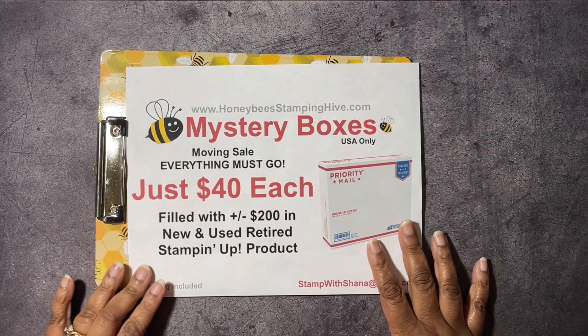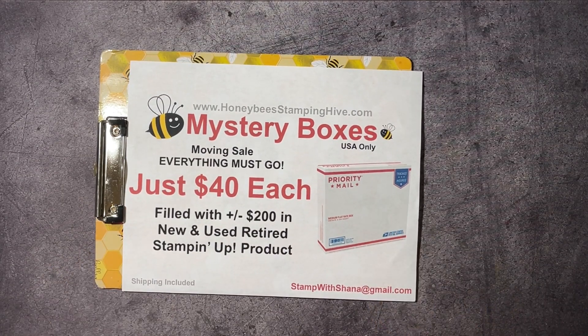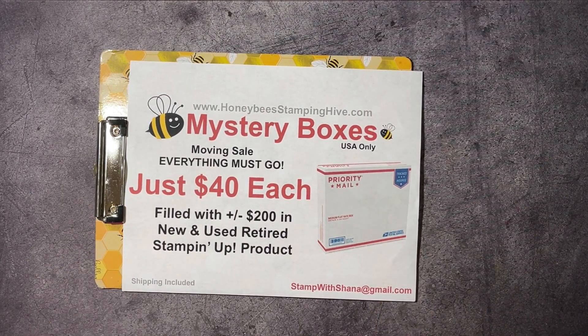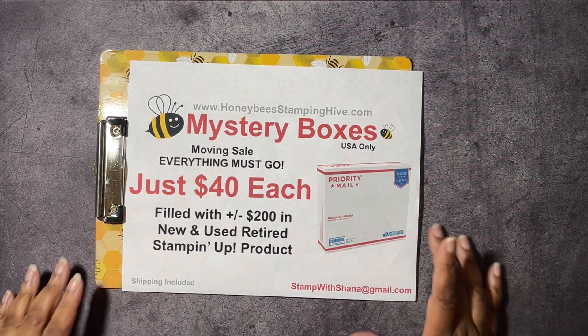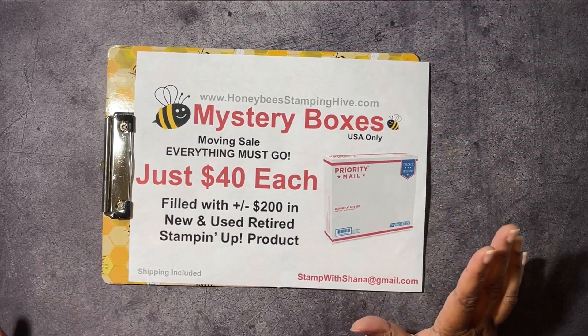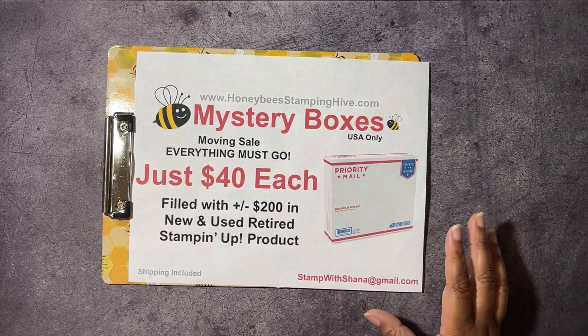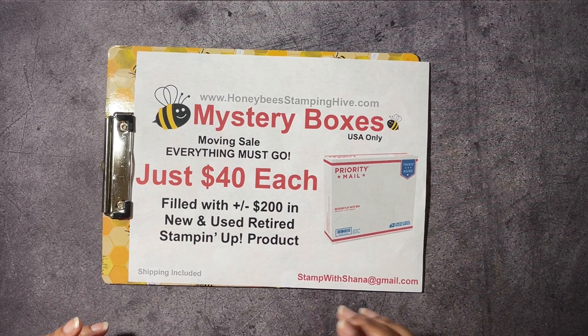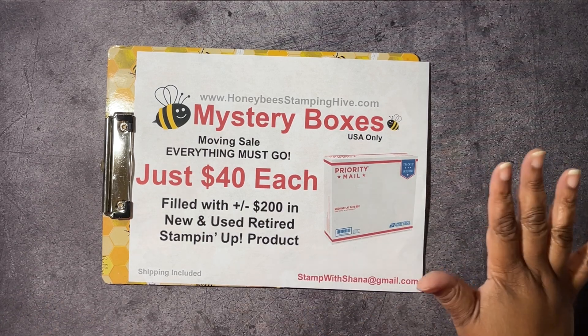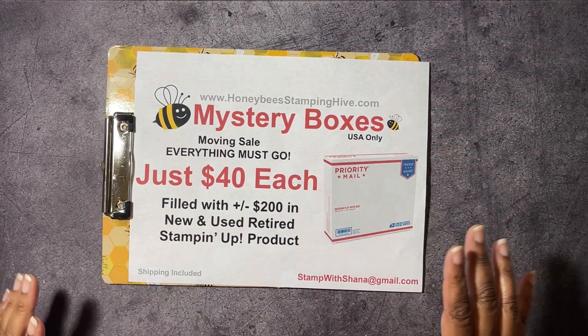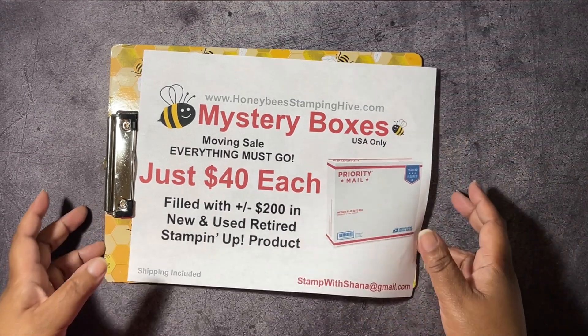Lastly, we have our mystery boxes. I am still trying to get rid of all of my extra Stampin' Up! products that I love to keep around after they retire, but I have to get rid of them. So I'm selling the medium flat rate boxes from the USPS for $40 each. They are stuffed with brand new products, used products, but they're all retired products. And they're all Stampin' Up!, I can only sell in the US and all sales are final. So let's go ahead and get started on our project with the end of that.